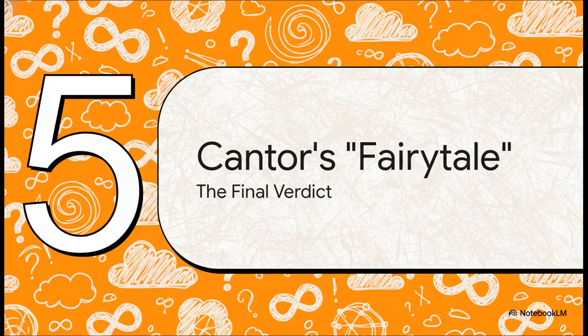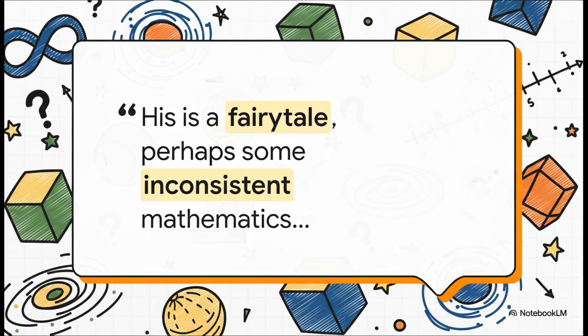If the very idea of a number falls apart when you push it to the extreme, then what does that say about Cantor's theory, which is all about infinite numbers? Well, this leads us to the author's final and pretty shocking verdict. The author doesn't see Cantor's work as some kind of bulletproof logical truth about the universe. Instead, they call it a fairy tale. Maybe it's a useful fairy tale, something that's great for getting close enough answers in physics or engineering. But an exact description of reality? No way. Because it's all built on these fuzzy, undefined ideas like number and infinity. It just can't be a rigorous, absolute truth.